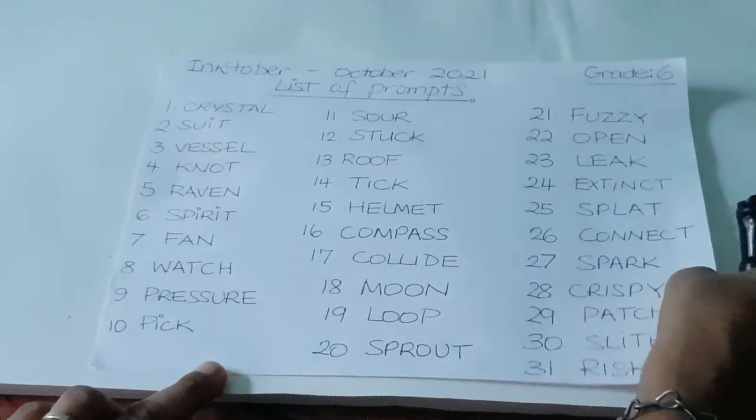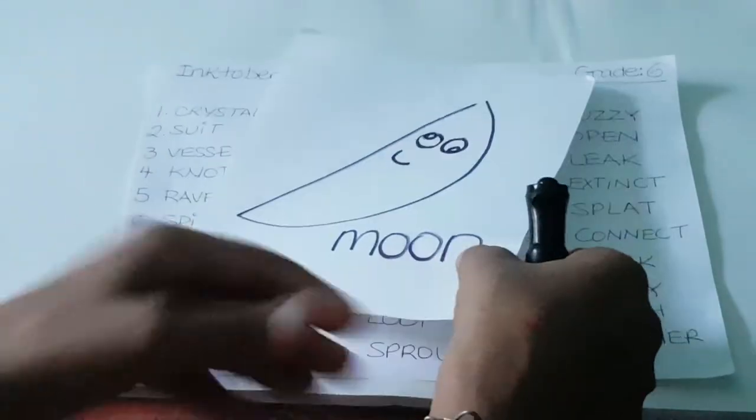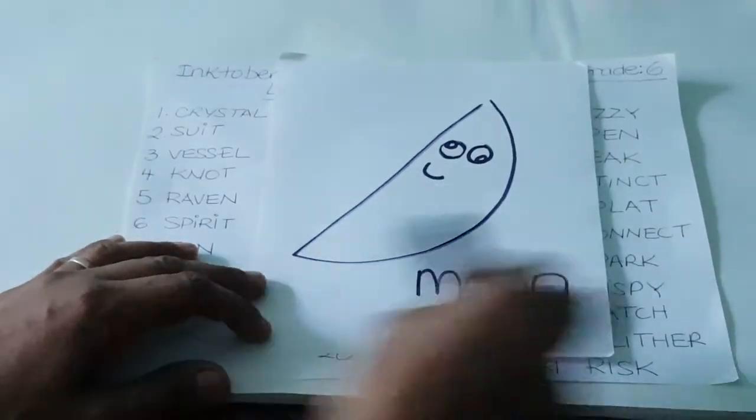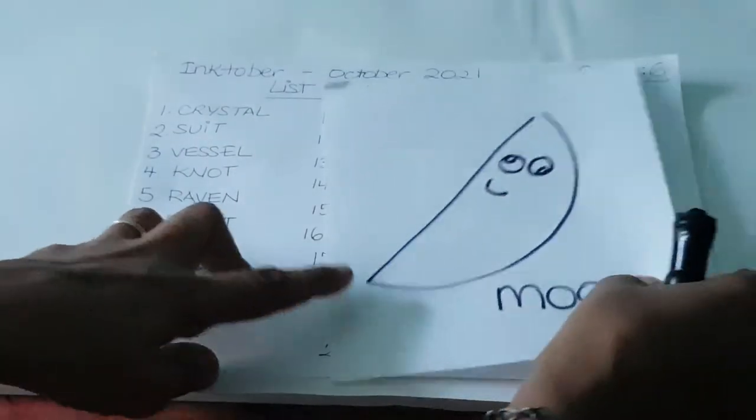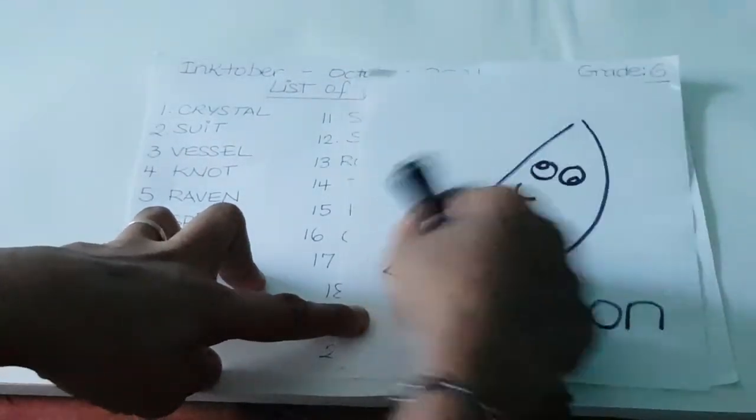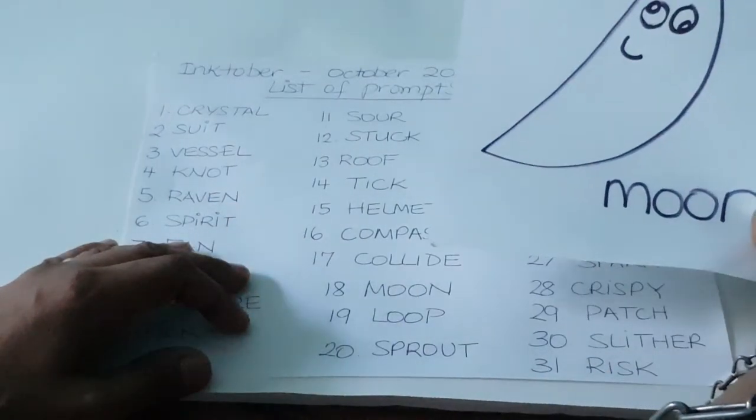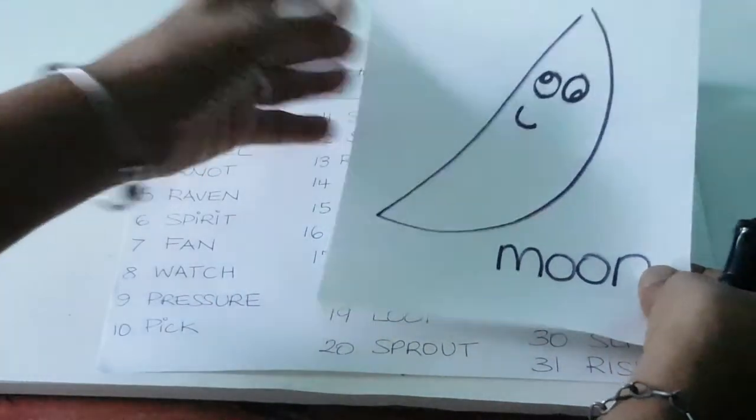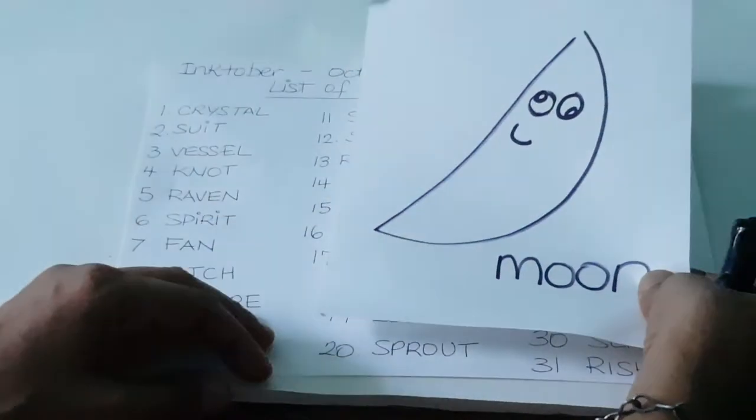And I did one for you to see. It's not going to be hard. You just cut a typing paper in half and then you have your moon and write the word moon. You have to do that 31 times. And then when you finish, staple it together for a booklet.